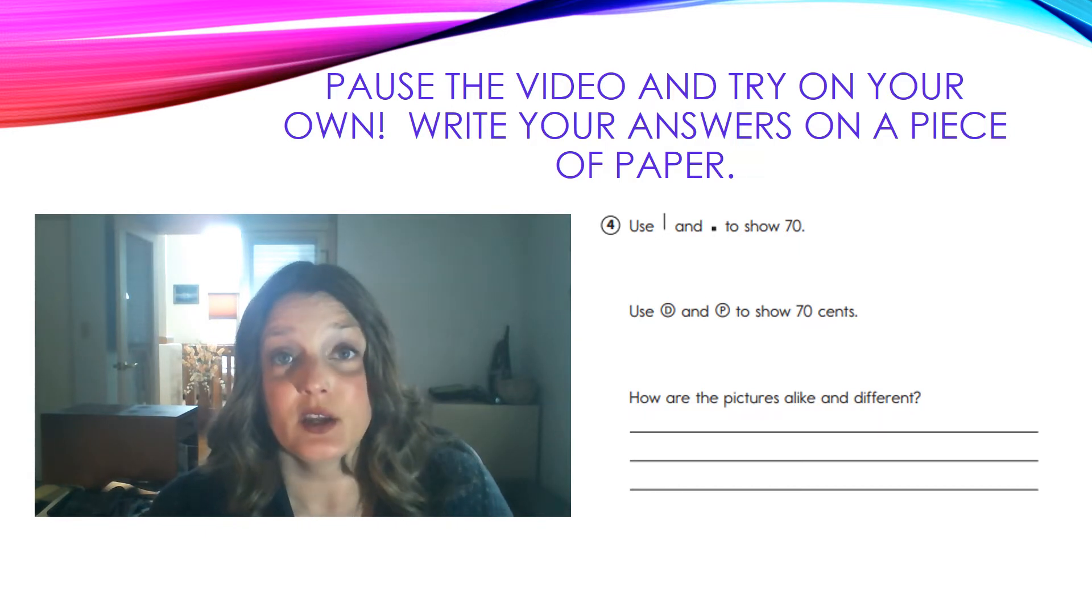In the next one, you're going to use dimes and pennies. For your dimes, you can draw a circle and put the letter D inside. That will stand for your dime or tens. For the penny, you can draw a circle and put the letter P inside. Those will be your ones. Now, use dimes and pennies to show 70 cents. Then, tell how your pictures are alike and different. Pause the video to try this on your own.